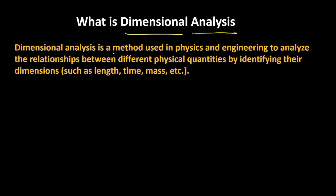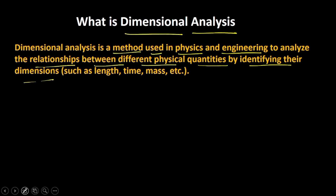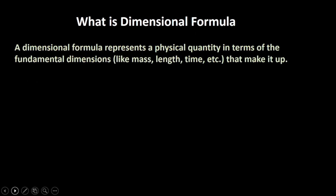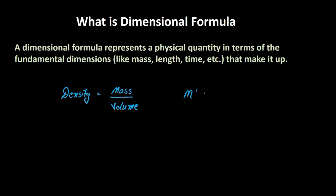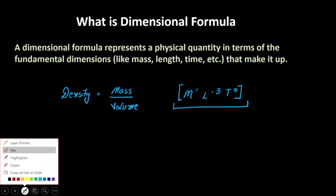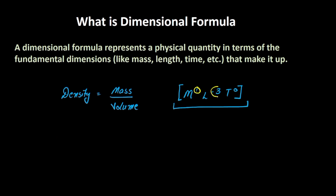Dimensional analysis is a method used in physics and engineering to analyze the relationship between different physical quantities by identifying their dimensions. You might be familiar with the dimensional formula as well. The basic formula of density is mass per unit volume. The dimensional formula for density would be M¹ L⁻³ T⁰. The exponents — 1 in mass, negative 3 in length, and 0 in time — are called the dimensions.